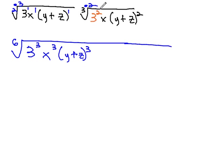On the second radical, we're multiplying the exponents all by 2, so we have 3 to the 2 times 2 or fourth power, x to the 1 times 2 or second power, and y plus z to the 2 times 2 or fourth power.